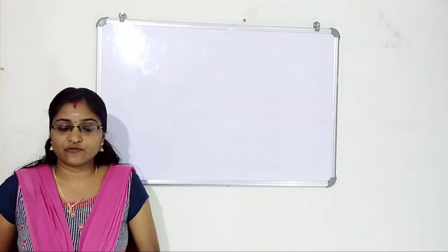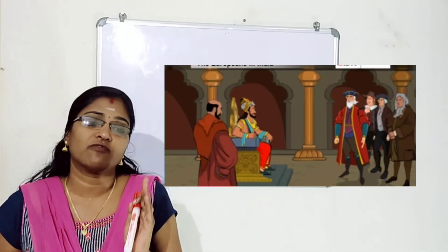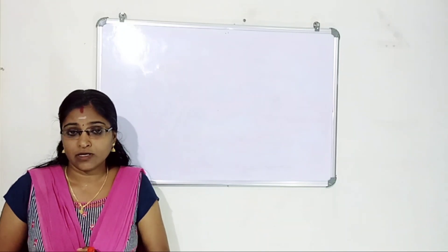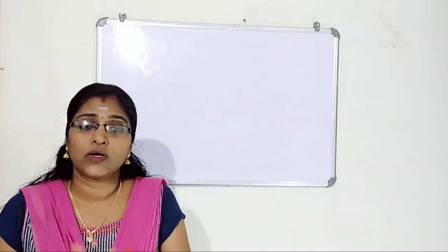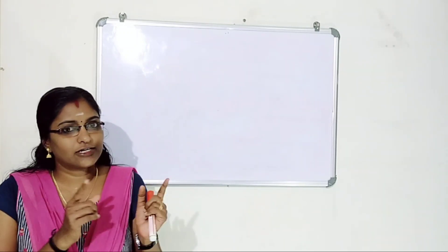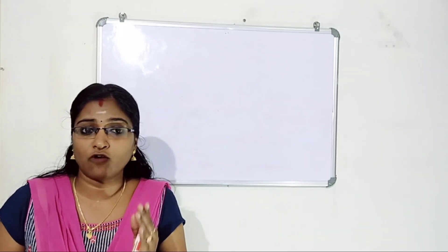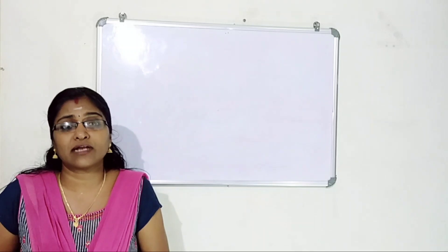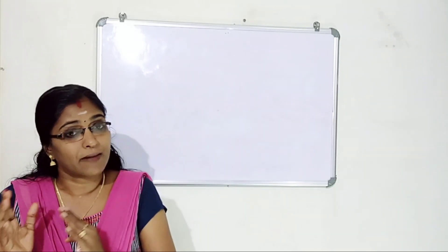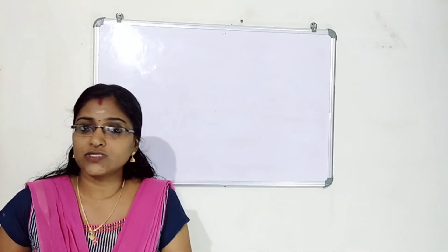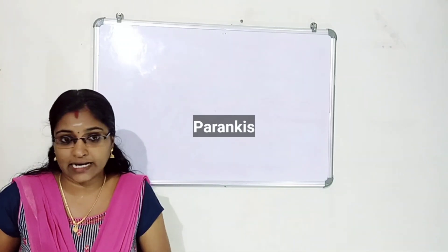The Zamorin, the ruler of Calicut, did not provide trading facility to Vasco da Gama. So he left for Kannur, gathered necessary goods, and then returned to Portugal. Vasco da Gama got a profit which was 60 times greater than the cost of their voyage by selling the goods they took back with them. Portuguese were also known as Parangis.